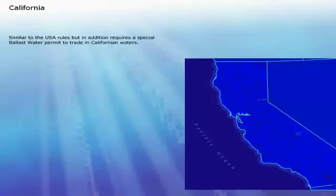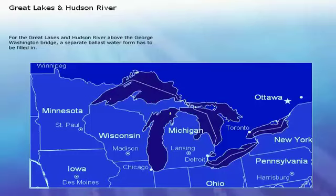California has similar rules to the USA, but in addition requires a special ballast water permit to trade in Californian waters. For the Great Lakes and Hudson River above the George Washington Bridge, a separate ballast water form has to be filled in.